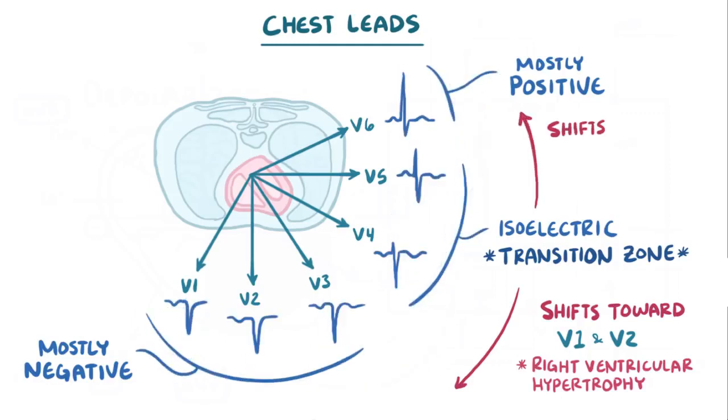On the flip side, if leads V5 or V6 look isoelectric instead of positive, it suggests that the heart might be rotated to the person's left, which can happen if the left ventricle is hypertrophied.